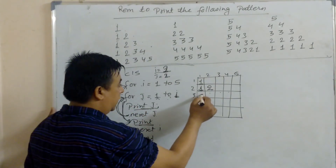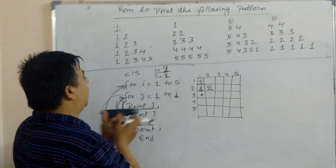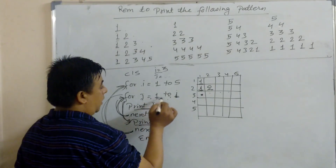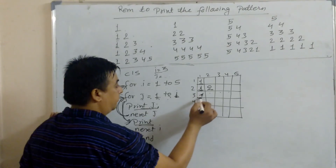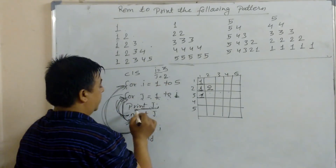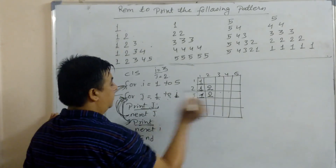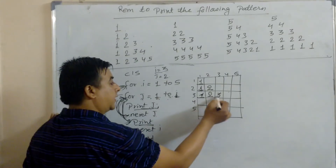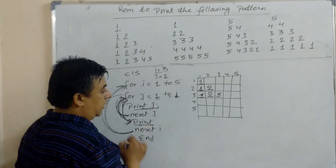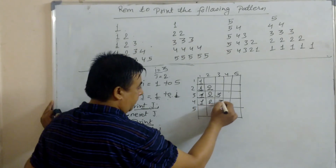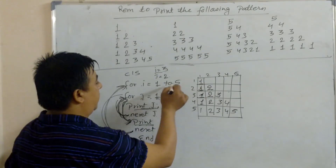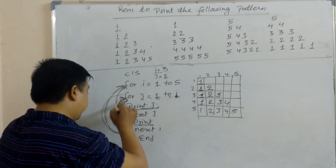Then NEXT I increases I by 1 to 3. J starts from 1; 1 to 3 is true, prints 1. It repeats: J becomes 2, 2 to 3 is true, prints 2. Again, 3 to 3 is true, prints 3. Then J becomes 4; 4 is not satisfied with 3, so it goes to the next line. In this way it repeats, printing 1, 2, 3, 4, 5 rows. When I becomes 6, 6 to 5 is false and the loop ends.